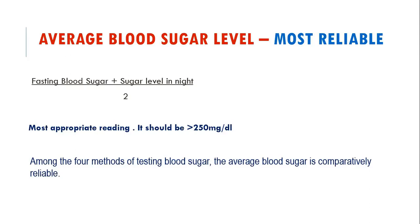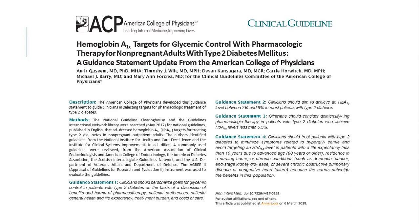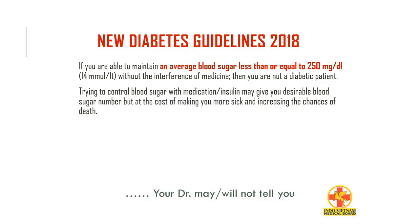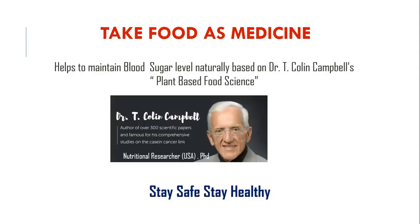The details of how the number 250 was derived are shown in our other videos, based on the new diabetes guidelines. As per the latest American College of Physicians 2018 guidelines, if a person is able to maintain an average blood sugar level less than or equal to 250 mg per deciliter without medicine, that person is not a diabetic patient. Trying to control blood sugar with medication or insulin may give a desirable number, but at the cost of making you sicker and increasing the chances of death. We recommend taking food as medicine to maintain blood sugar naturally, based on Dr. T. Colin Campbell's plant-based food science.